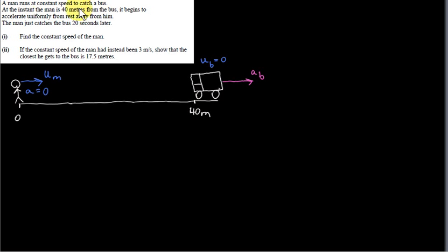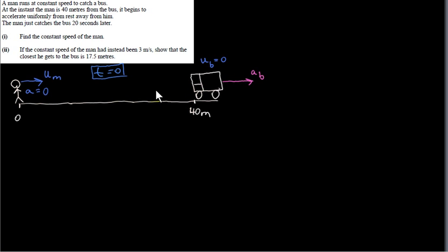A man runs at a constant speed to catch a bus. At the instant the man is 40 meters from the bus, it begins to accelerate uniformly from rest away from him. The timer is set to 0 at that instant — specifically 40 meters from the door at the back of the bus. The man is running with a constant speed U_M, meaning his acceleration is 0. The initial speed of the bus is 0, and its uniform acceleration is A_B.